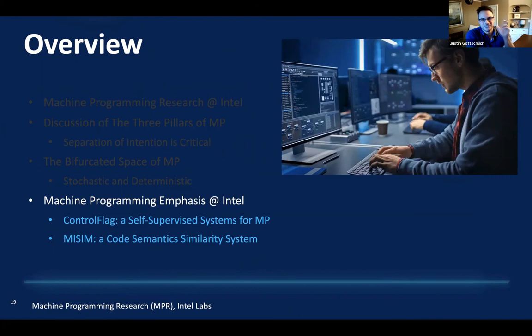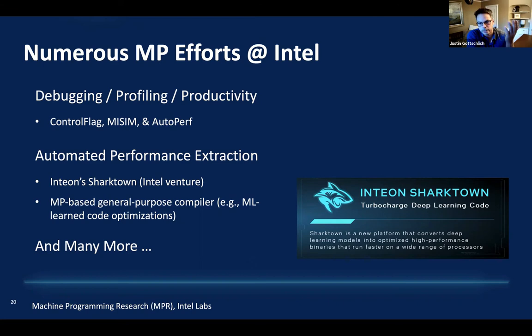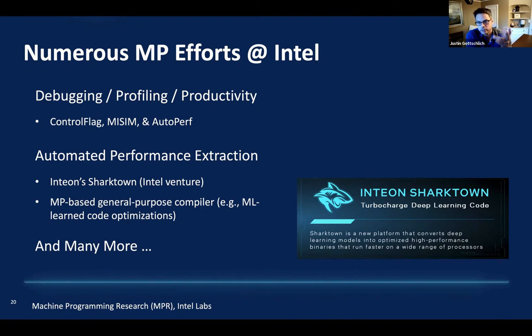When I started working on machine programming back in 2016 at Intel, it was basically an effort of one person — just me trying to convince a 100,000+ employee company to investigate this field. A lot of people said no, you're crazy, this is never going to happen. But slowly work started to emerge. From 2016 to 2021, we've gone from one person to thousands of people at Intel working on machine programming. We have an entire startup, Intian, that launched a couple years ago all about machine programming, as well as my lab. There are probably several dozen organizations within Intel adopting machine programming in some capacity.